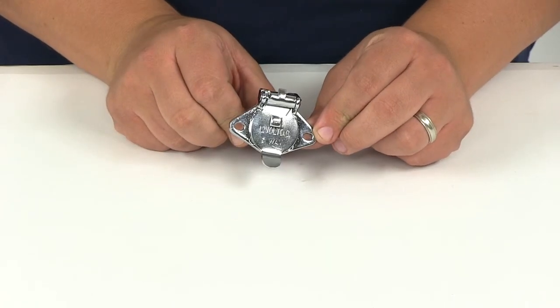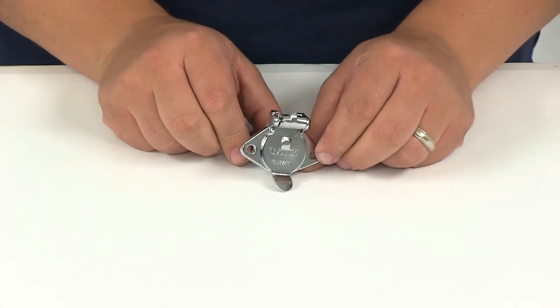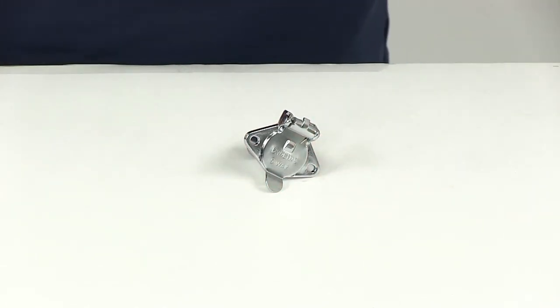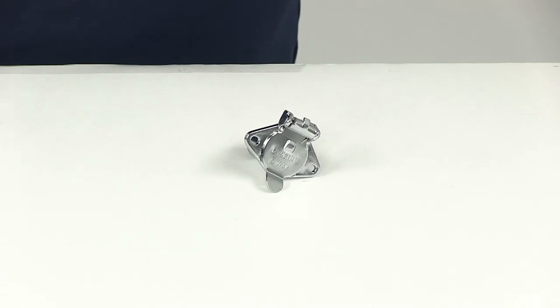That's going to do it for today's review of part number PK11502, the Pawlik 5-pole round pin trailer wiring socket with concealed terminals.